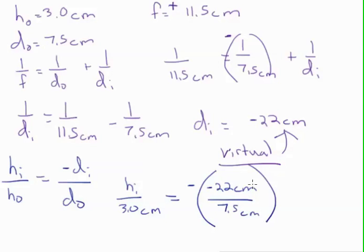And the two negatives cancel each other out. We can do 22 divided by 7.5, and then we can multiply it by 3. And we get HI equals positive 8.8 centimeters.